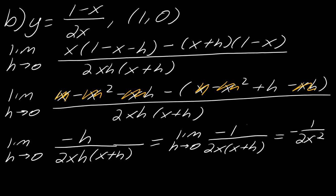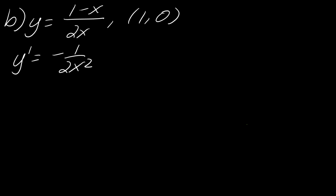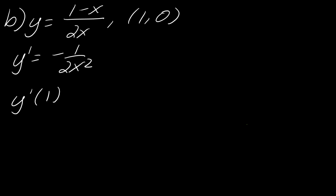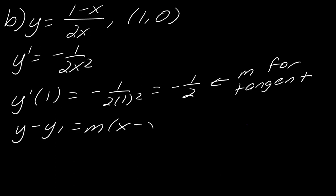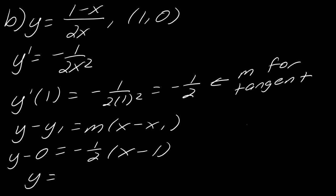That's the work to find the derivative. Another reminder: this is not the tangent line — it's how you find the slope of the tangent line. To find the tangent line at (1, 0), plug x = 1 into the derivative: f'(1) = -1/2. This is my slope m. Using point-slope form with slope -1/2 and point (1, 0): y minus 0 equals -1/2 times (x minus 1), giving y = -½x + ½ as the tangent line.